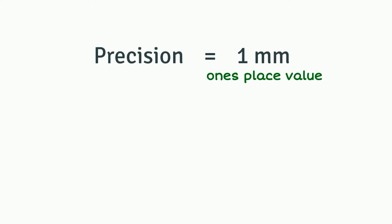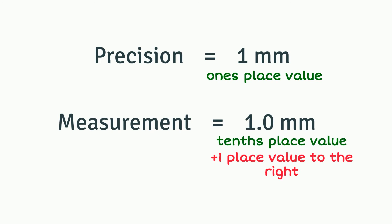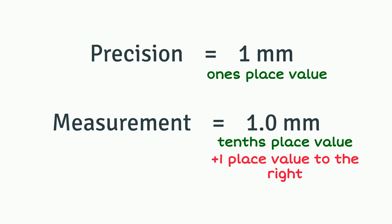Therefore, measurements that can be obtained from the instrument can be until the next place value to the right of the precision of the instrument.